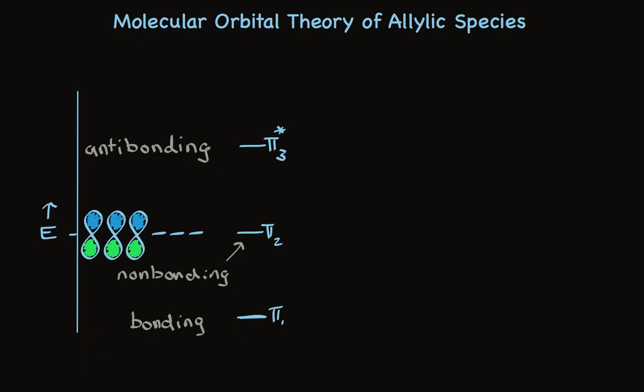When we think about how these molecular orbitals actually look like in an atom, we need to think about how the p-orbitals interact. The lowest energy MO, the most stable one, has all three p-orbitals interacting in phase. In the non-bonding orbital, we only have two of the p-orbitals interacting, and they have one node.